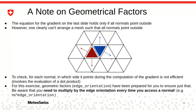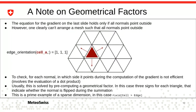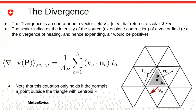A note on geometrical factors: the problem with normal vectors is we always want to save them only once, but they're differently oriented depending on which cell you're computing from. To save space and make this efficient, we have something called edge orientation — a plus one or minus one for every cell indicating which way the normal vector should be oriented. For cell A the edge orientation is [1, 1, 1]; for cell B it's [-1, 1, 1] because we need to flip that normal vector.